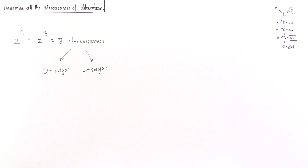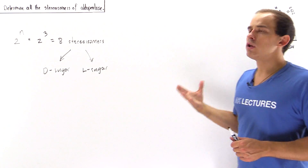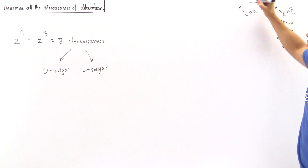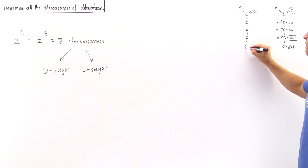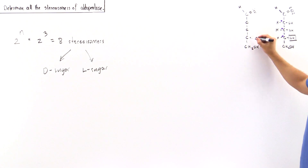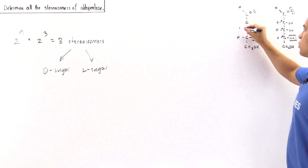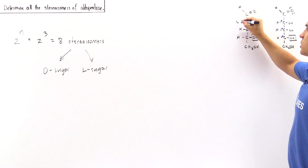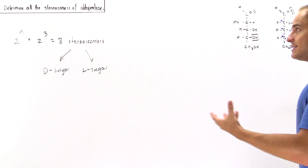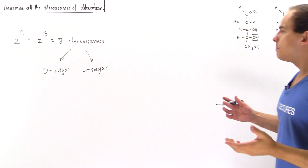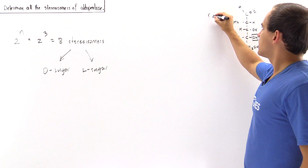Let's begin by determining all four D-aldopentose stereoisomers. The first one has all OHs pointing to the right — this is called D-ribose. For the second D-aldopentose, we have our five carbons with the primary alcohol at the bottom. The OH on the last stereogenic carbon points to the right — that's what defines the D-sugar. Now let's suppose this OH also points to the right, but this OH points to the left. This gives us a second D-aldopentose, different from D-ribose, with its own name.